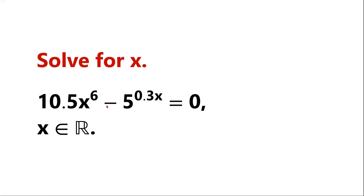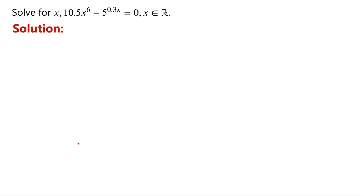Solve this equation where x is a real number. By rearranging the equation, we can write 10.5x to the power of 6 equals 5 to the power of 0.3x. Clearly, x equals 0 is not a solution.